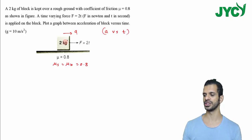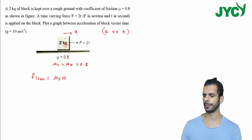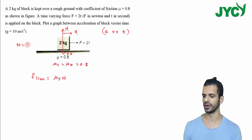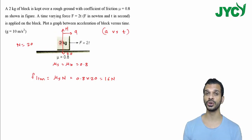Where 'a' is the acceleration of the 2 kg block. First, we calculate the maximum static friction. The limiting friction f_max equals mu_s into normal force. The normal force N is equal to 20 N. So f_max equals 0.8 into 20, which is equal to 16 Newton.